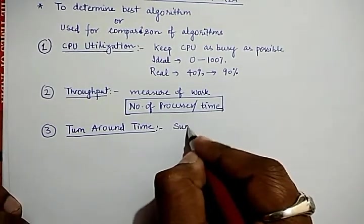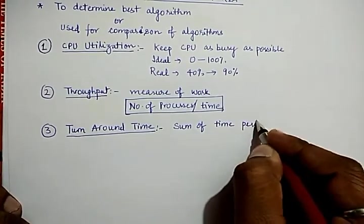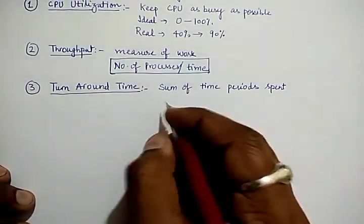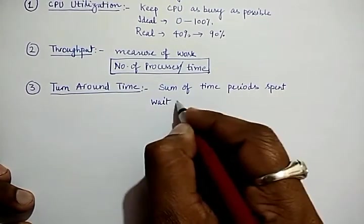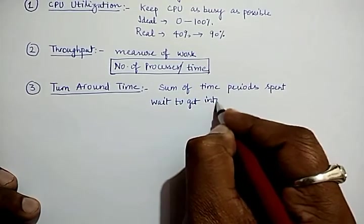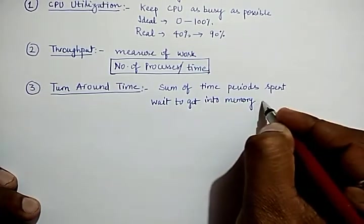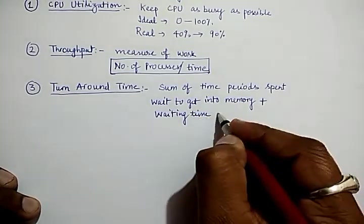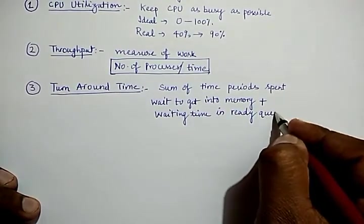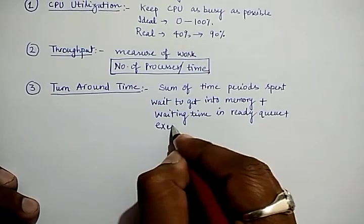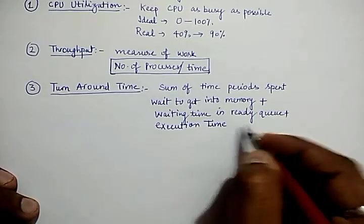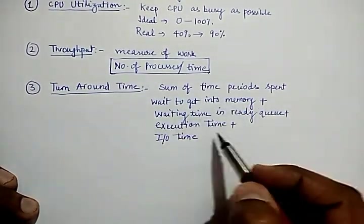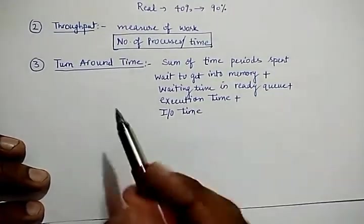The third criteria is called turnaround time. Turnaround time is the sum of various time periods spent by a process — the time to get into memory, plus the waiting time in the ready queue, plus execution time, and IO time. The sum of all these times spent by a process is considered to be the turnaround time.